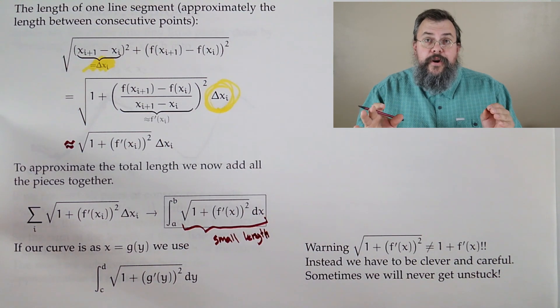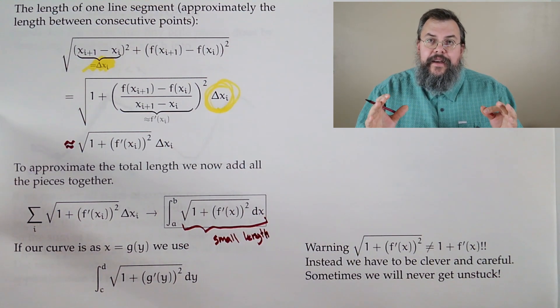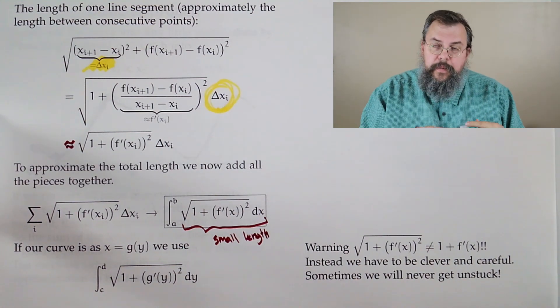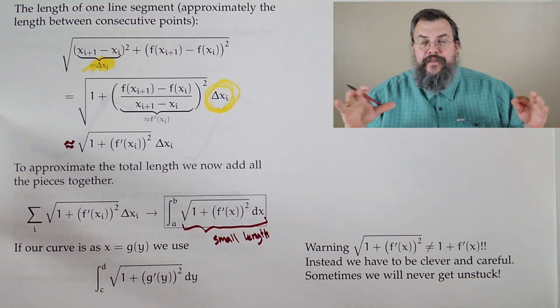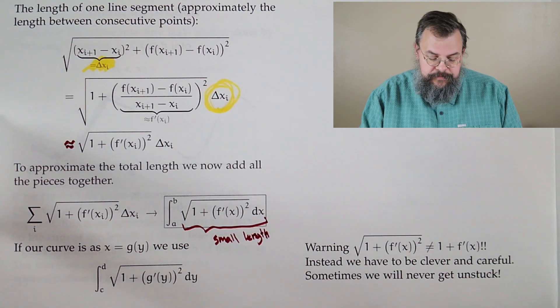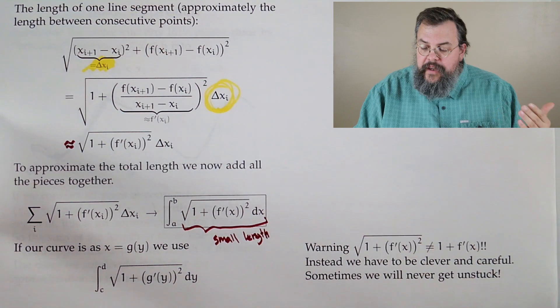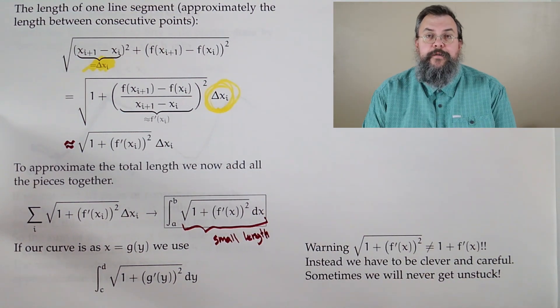Now, a few notes. We've written everything in terms of x, nothing's sacred about x, we could turn everything sideways. And we could say, well, suppose we have x as a function of y, same process, same process, we just throw different symbols in, no problem. Now, the basic idea is not so bad. It's like, okay, you have to integrate this expression, the square root of 1 plus f' squared.